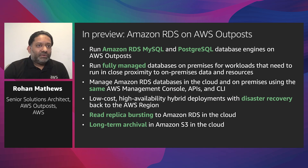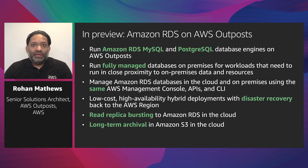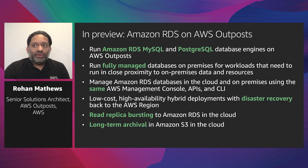RDS also enables low-cost, high-availability hybrid deployments with disaster recovery back to the AWS region. For example, you can have read replicas bursting to Amazon RDS in the cloud, and you can perform long-term archival in S3 in the cloud.